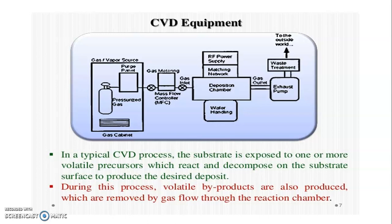In a typical CVD process, the substrate is exposed to one or more volatile precursors which react and decompose on the substrate surface to produce the desired deposit. During this process, volatile by-products are also produced, which are removed by gas flow through the reaction chamber.